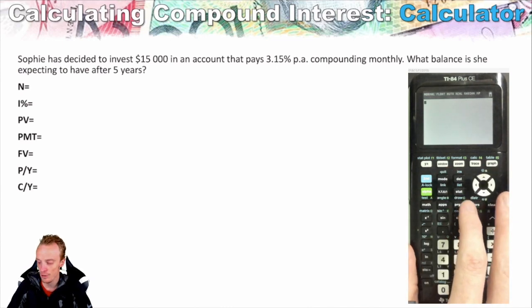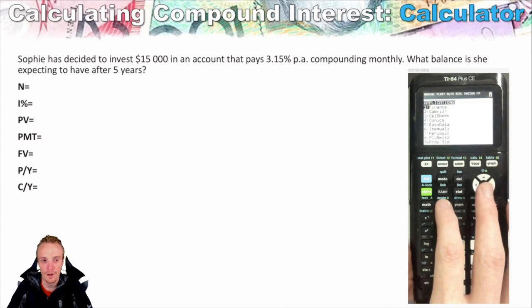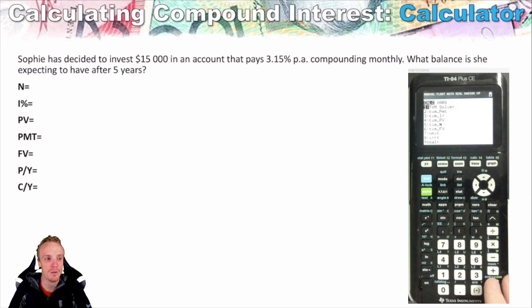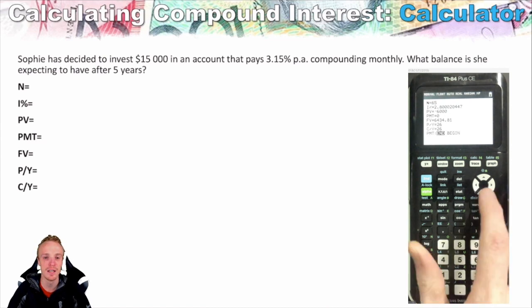If we go to the app section of the calculator, we'll find a finance section. Hit enter on that, and you'll have the TVM Solver, which you can hit enter on. This is actually where your compound interest section of the calculator is, and you'll notice that we have all these different sections here.